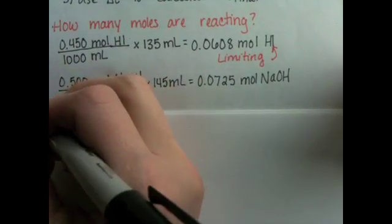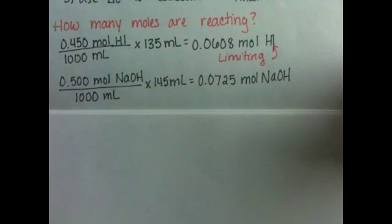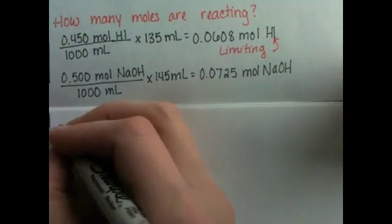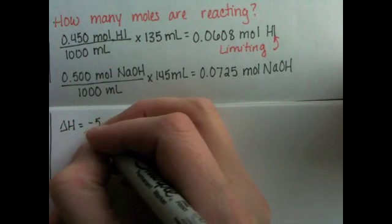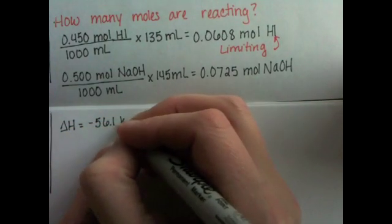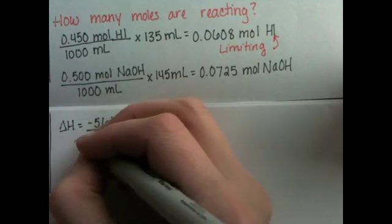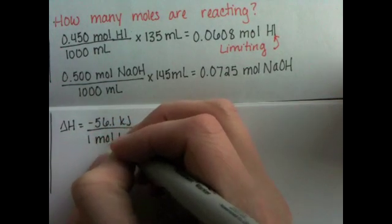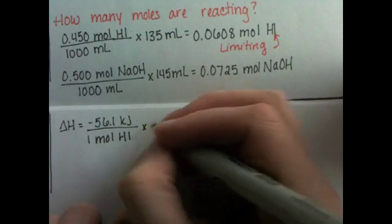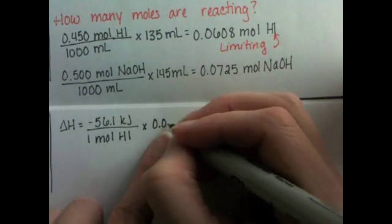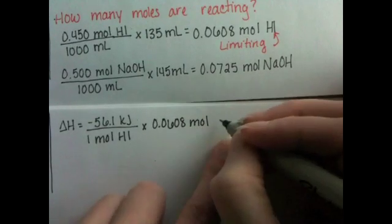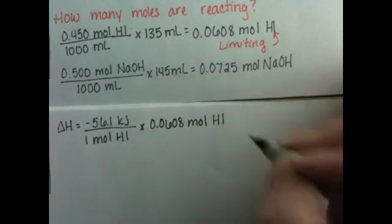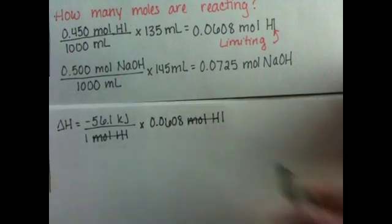So we are going to use our ΔH like a conversion factor. It is negative 56.1 kJ for every 1 mole of HI. Our actual quantity of HI is 0.0608. And if our sodium hydroxide was the limiting reagent, we'd be using the sodium hydroxide here in this step instead.